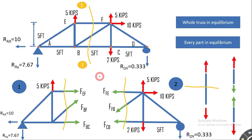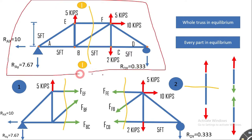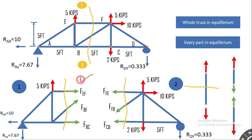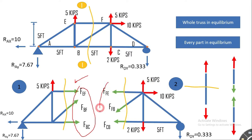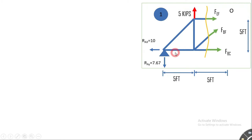A principle of equilibrium states that if the whole structure is in equilibrium, then every part of it is in equilibrium. The same applies to the truss: if the whole truss is in equilibrium, both the left and right parts are in equilibrium. So we can apply conditions of equilibrium to each part and solve for the internal member forces.